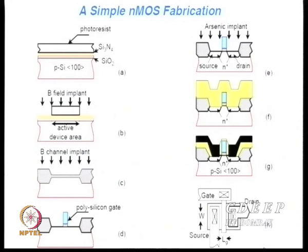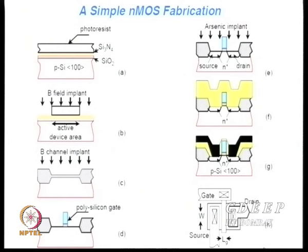Each mask must be aligned with the earlier one through a microscope in a process called lithography. Lithography is the major crux of all processes. After opening contact windows for source, drain, and gate, the last mask is the metal mask. This is a 5-mask process; a standard CMOS process uses 16 masks, and some chips may require up to 32 masks.